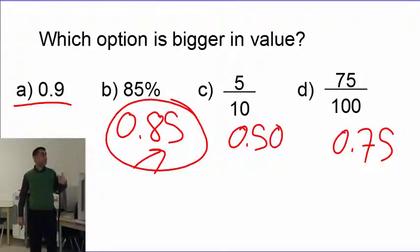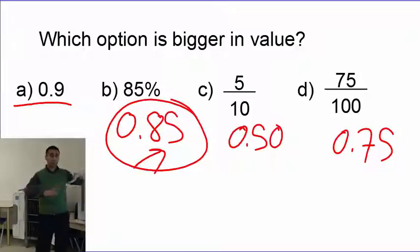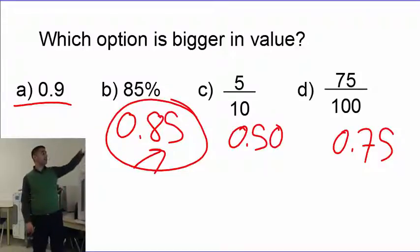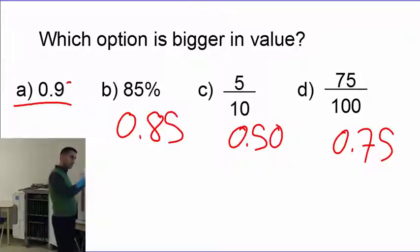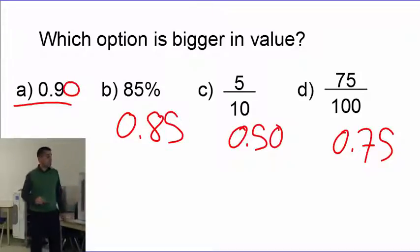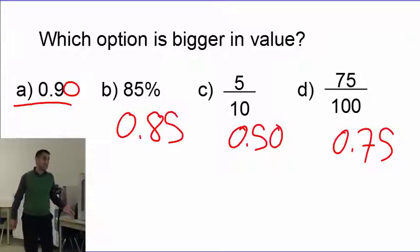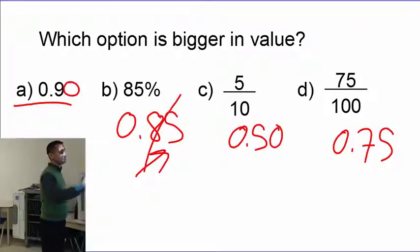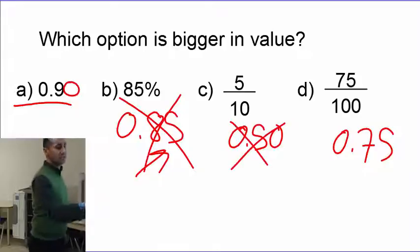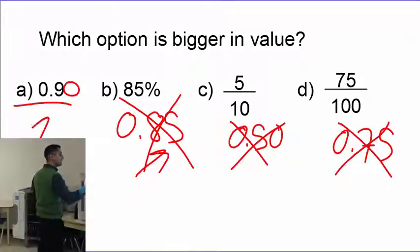But it's really important you follow this step — they all should have the same number of digits to compare properly. When you add zero, 0.9 becomes 0.90, and you know 90 is bigger than 85. So the biggest is 90, then 75, then 50 — so option A, 0.90, is the right answer. Let's practice.